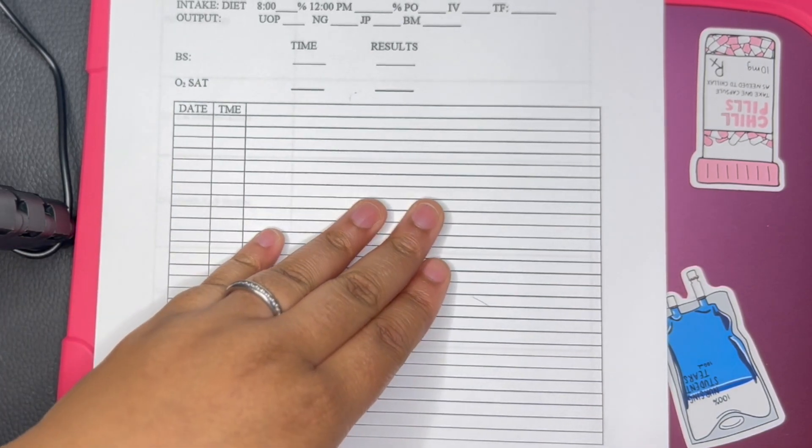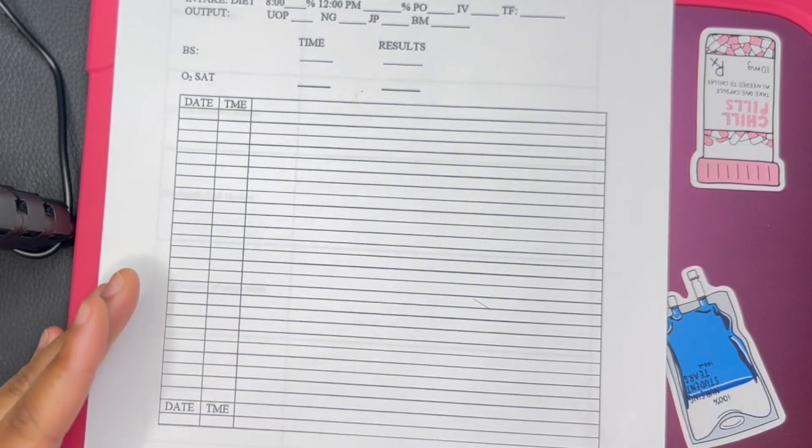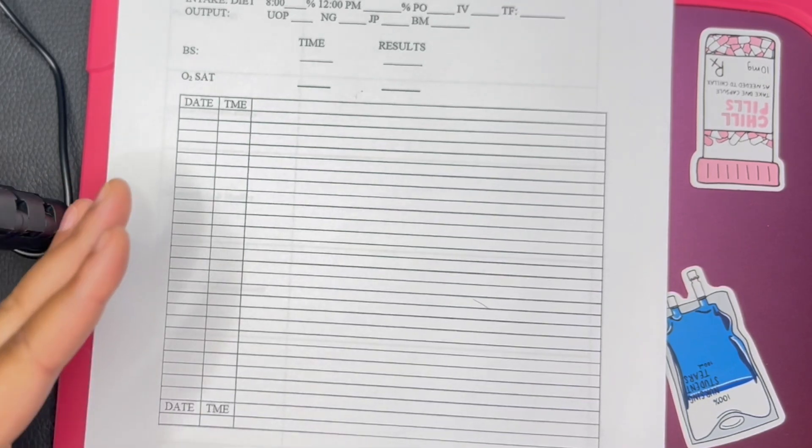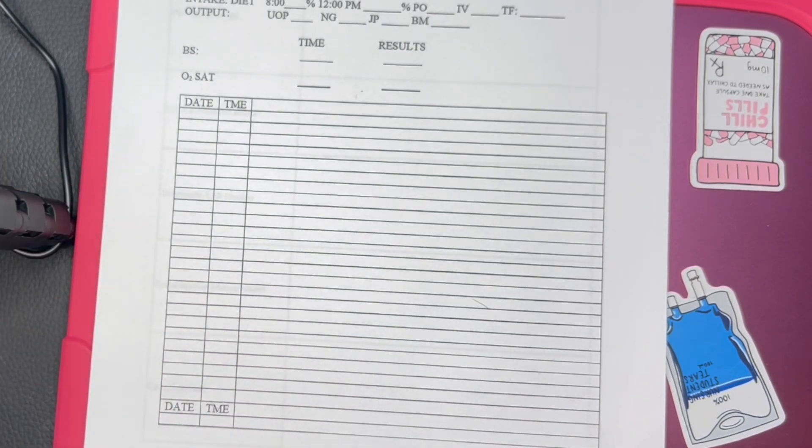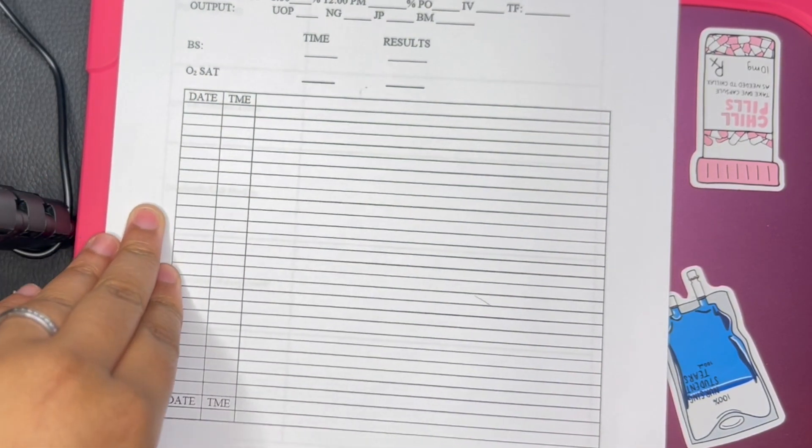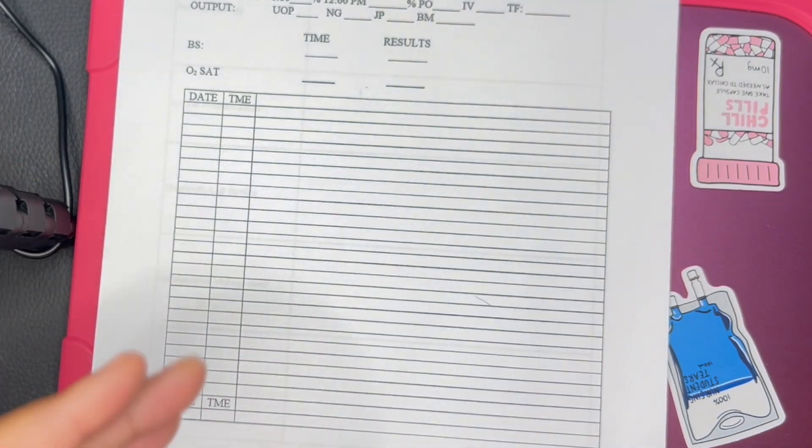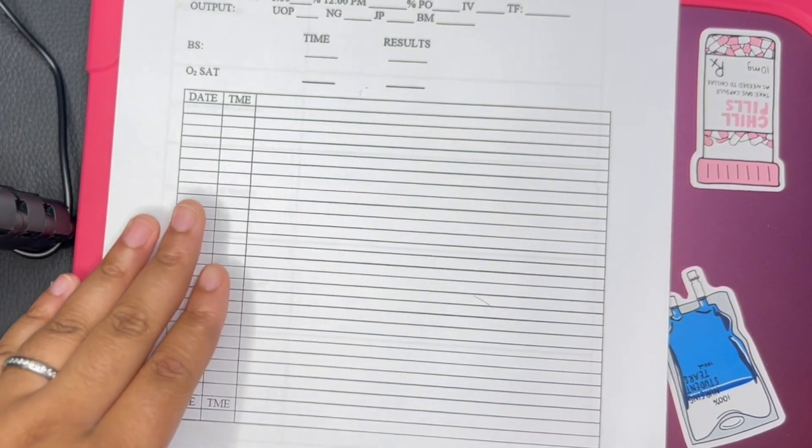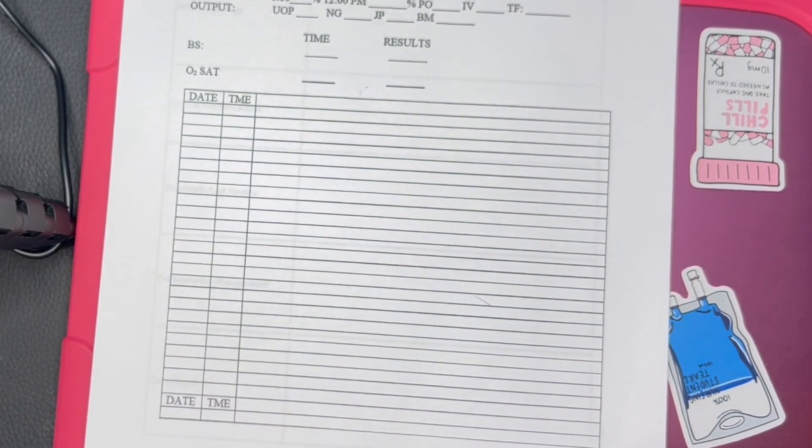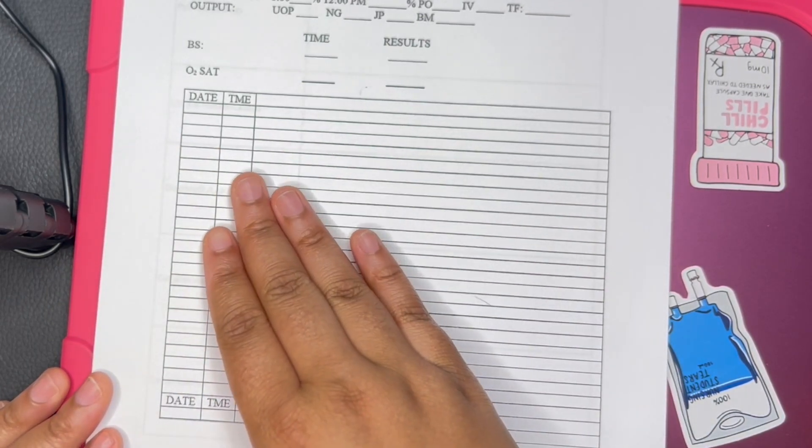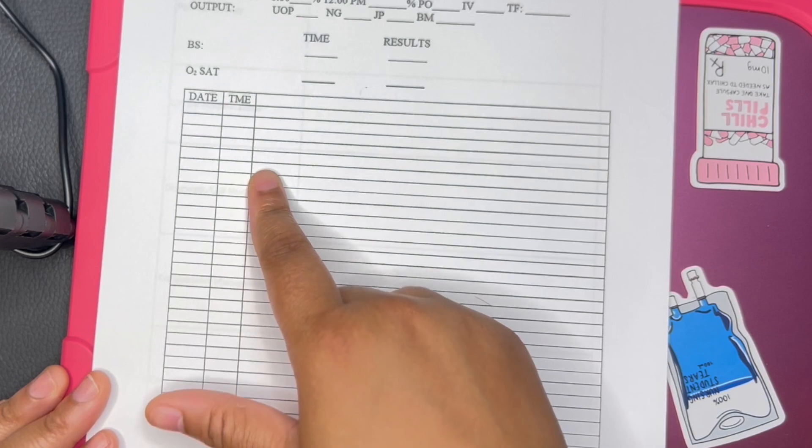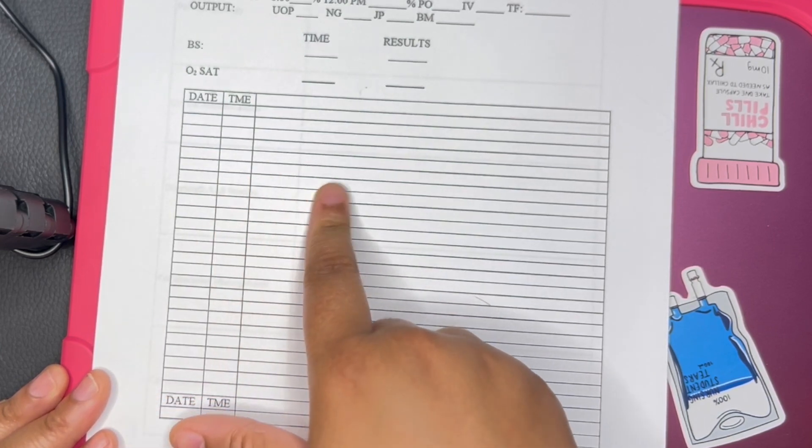You gathered your vital signs. Then let's say you go back later and you're checking on the patient. Let's say your patient's on a turn schedule, then you'll put that you checked on the patient, assisted the patient with turning, assess the pain level, educate the patient on the importance of turning. You need to put that information there also.